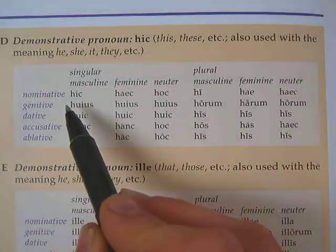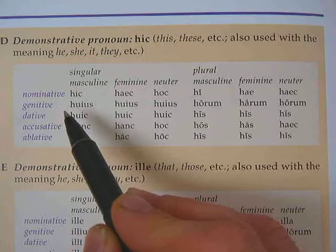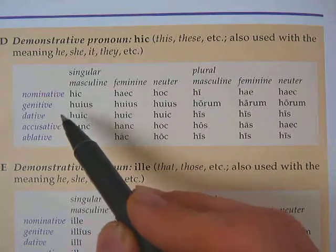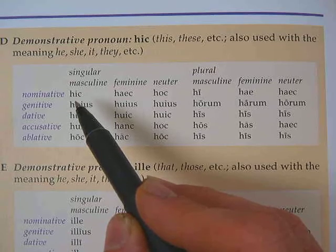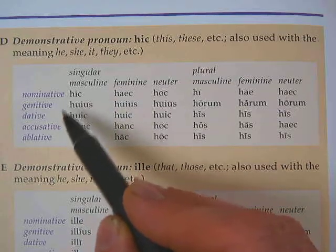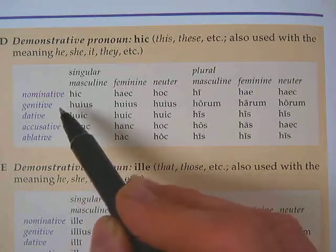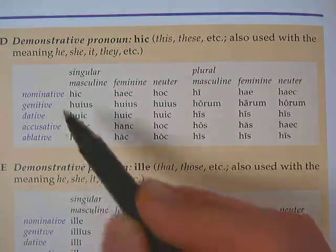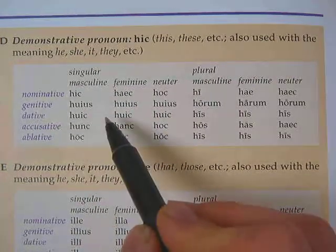An interesting thing to note about pronouns — for all pronouns but especially these — you can just say hic and it means 'he,' just like is can mean 'he' or 'this' when it's with a noun. Hic can mean 'he' all by itself, or hic vir can mean 'this man.' It can be used as a noun or as an adjective. When used as a noun by itself, that's called a substantive or substantival use. Put it with a noun and it's functioning as an adjective.